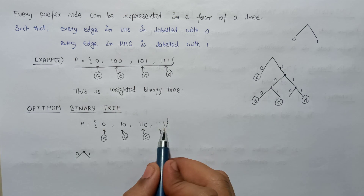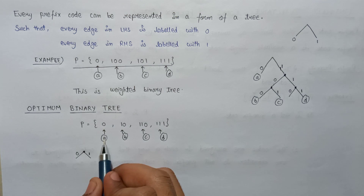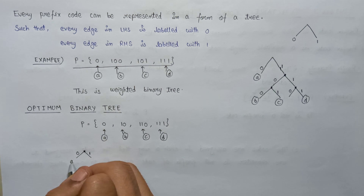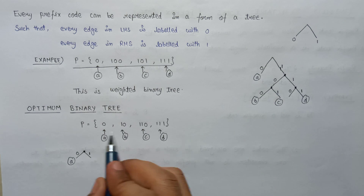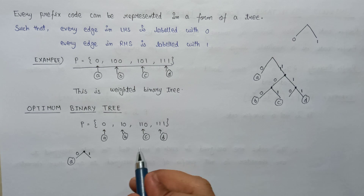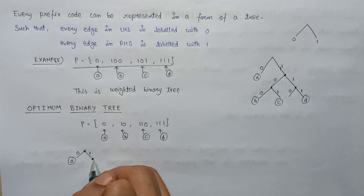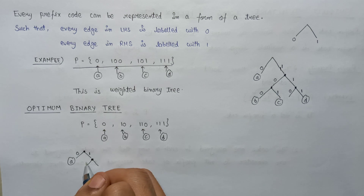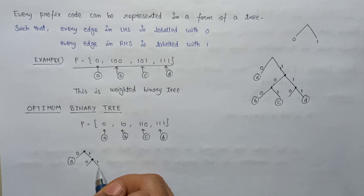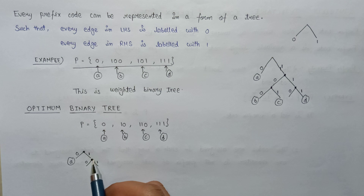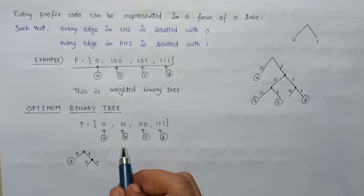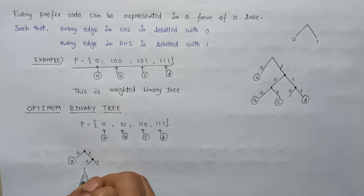Is 0 present in this set? Yes, it is at A. So we write A here. Is 1 present in this set? No, it is not. So we continue the procedure, assigning 0 in the LHS and 1 in the RHS. The code word becomes 10. Is 10 present? Yes, it is at B. So we write B here.